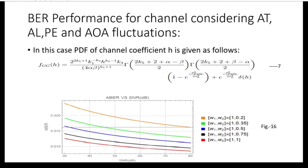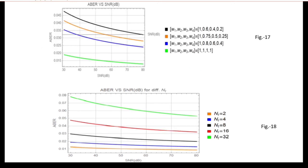Now we consider atmospheric turbulence, attenuation loss, pointing error, and angle of arrival fluctuations together. The PDF of the channel coefficient is given in equation 7. Figure 16 shows the ABER versus SNR performance for the two-transmitter, one-receiver case — for non-uniform bits, system performance improves when moving toward uniform weight distribution. Figure 17 shows ABER versus SNR for the four-transmitter, one-receiver case. Figure 18 shows ABER versus SNR for multiple transmitters and one receiver, where again system performance degrades as the number of transmitters increases. There is a trade-off between spectral efficiency and bit error rate performance.